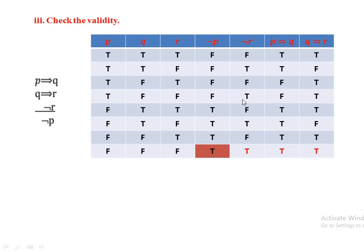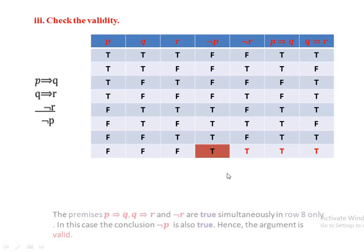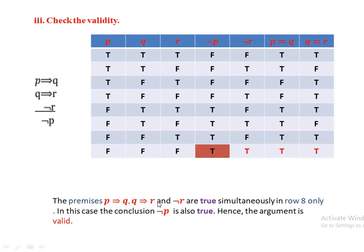From these truth tables we observe that all premises — P implies Q, Q implies R, and negation R — are true simultaneously only in row 8. In row 8 the corresponding conclusion, negation P, is also true. Therefore the given argument is valid.